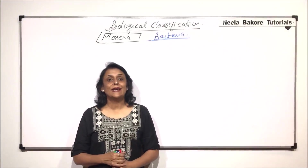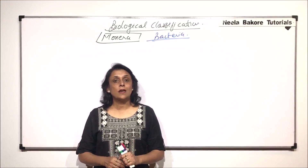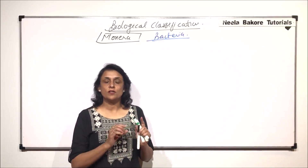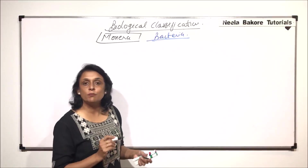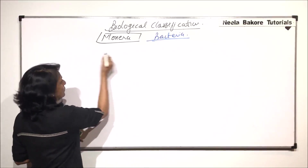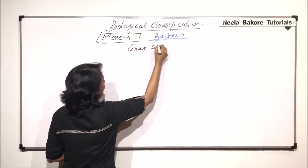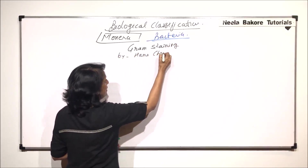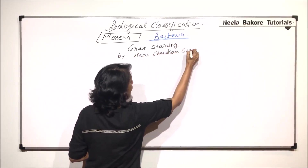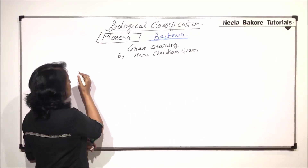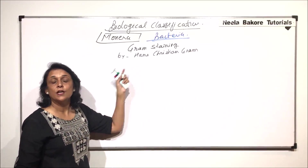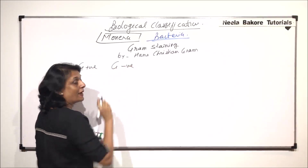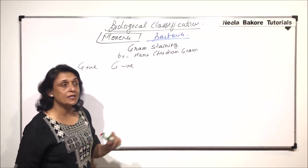In this part we'll talk about Gram staining and how by using this Gram stain we are able to distinguish between Gram positive and Gram negative bacteria. This staining procedure was developed by Hans Christian Gram, and that is why it is called Gram staining. If a bacterium gets stained by this particular procedure, we call it Gram positive; otherwise it is Gram negative.